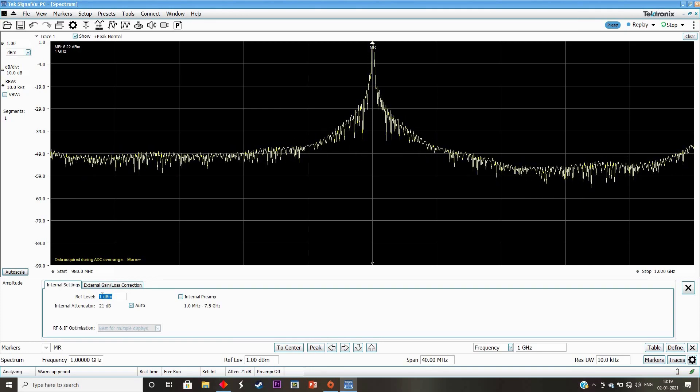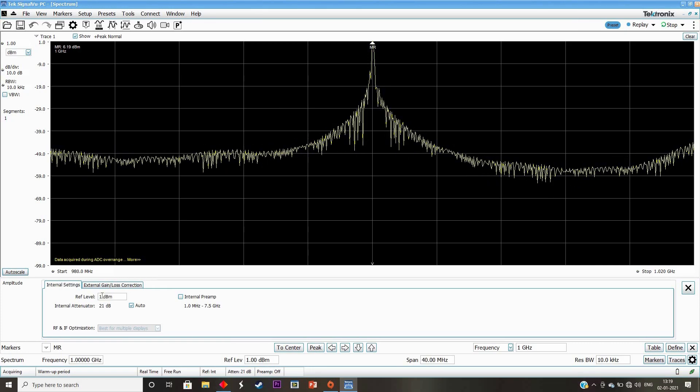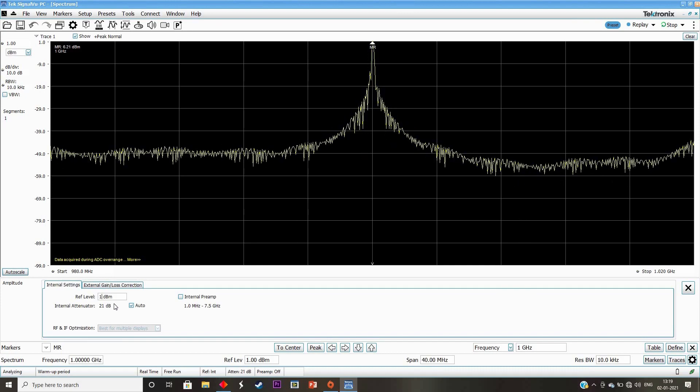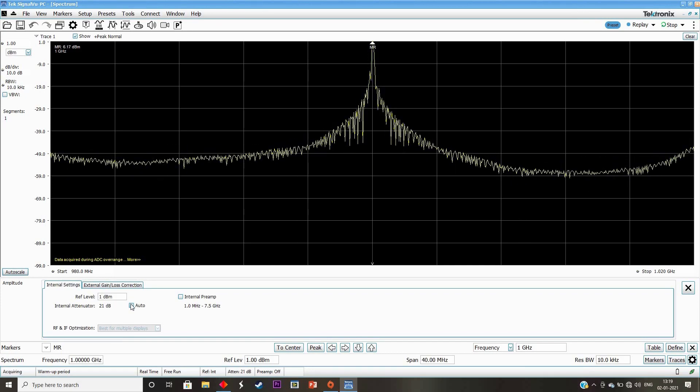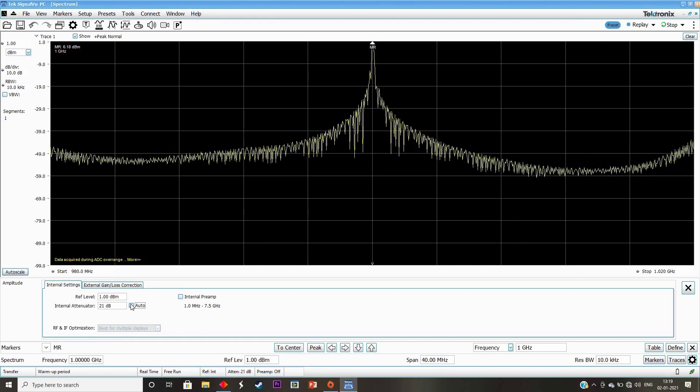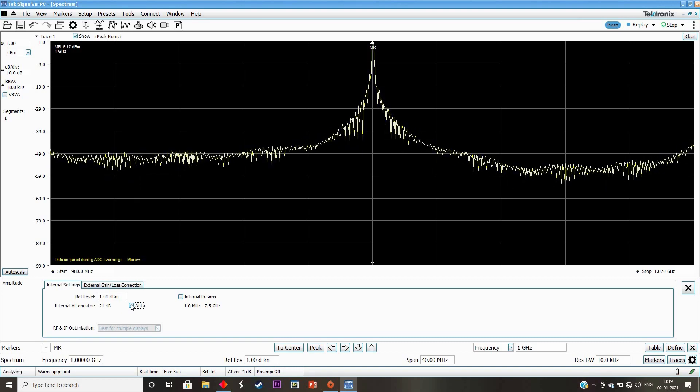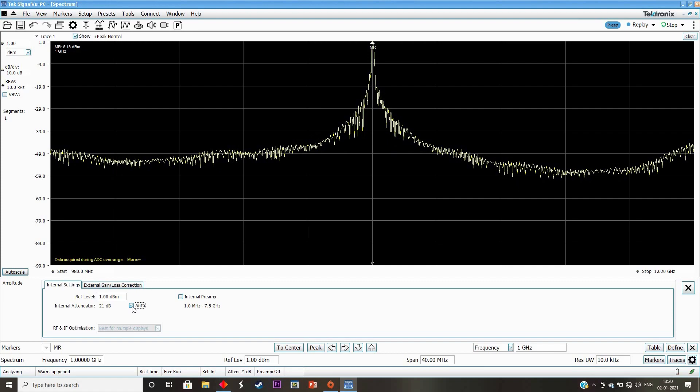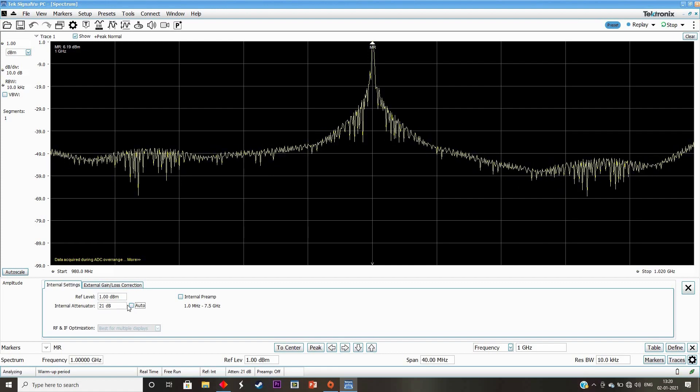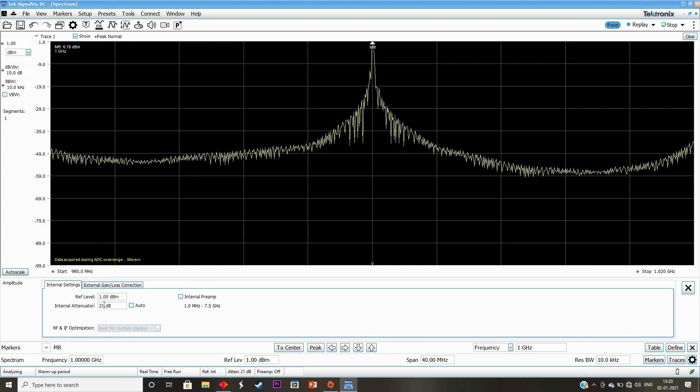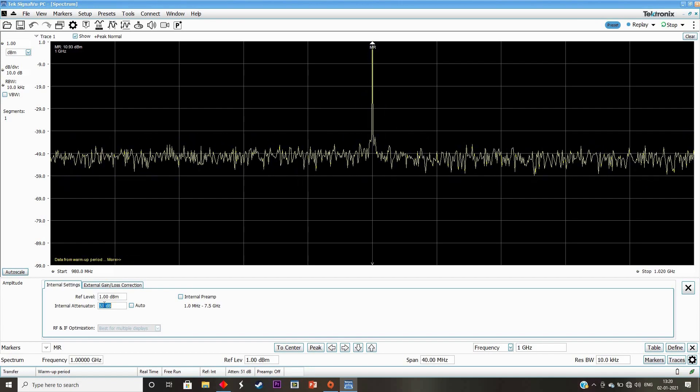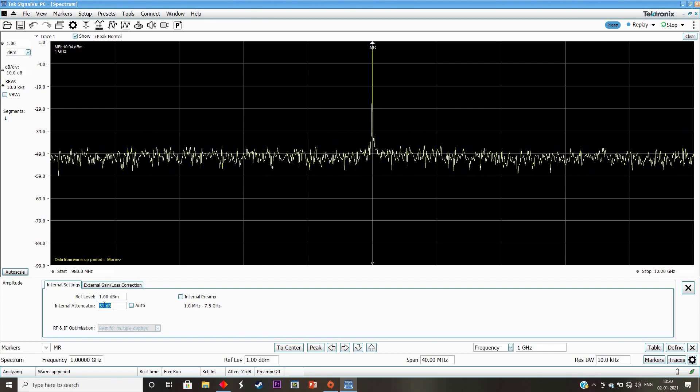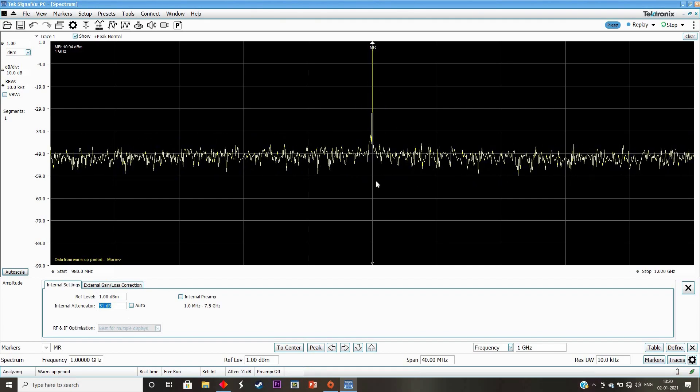It shows the data acquired has ADC over range. Remember, reference level is now connected to input attenuator. Let us disconnect it. Let us change the input attenuator settings by unchecking it and increasing the attenuator to avoid the ADC over range. I changed it—now if you see, the error is gone.